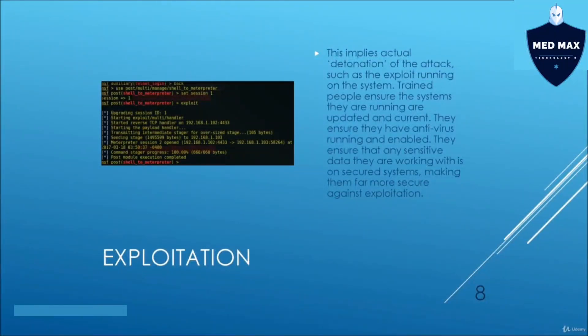In the exploitation stage, once you've weaponized and delivered the payload, the user clicks on it and you get a reverse shell immediately. This is the detonation of the attack. Once the exploit happens, we are into the system and this allows us to have control of their environment. This is all about gaining access and bypassing security mechanisms.